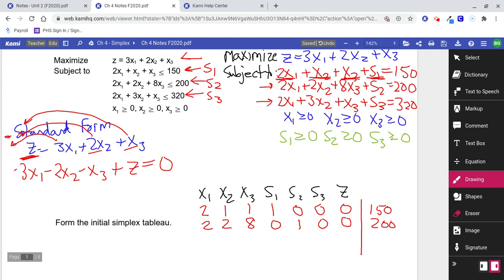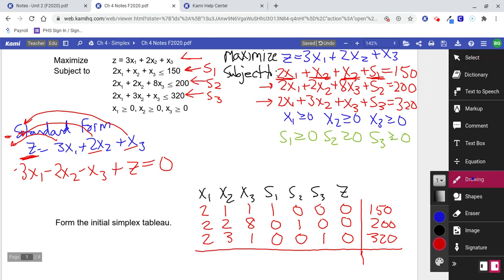So, then the third one says 2x1, 3x2, 1x3. There is no s1. There is no s2. There is 1s3. There is no z. And it equals 320. Now, draw an underline right there. So, you've got a vertical line and a horizontal line that cross. You've got kind of a crossing, horizontal, and vertical line. And underneath that vertical line, I want to put my standardized form of the objective function.